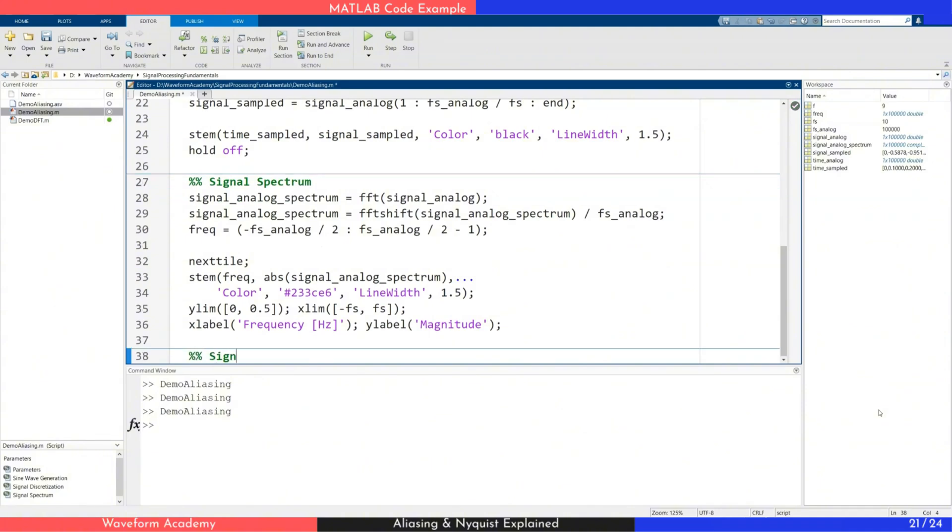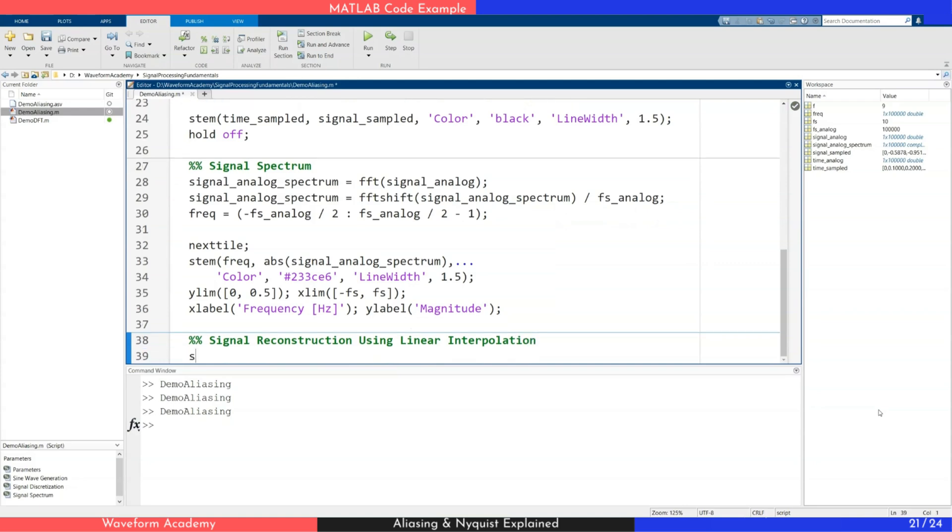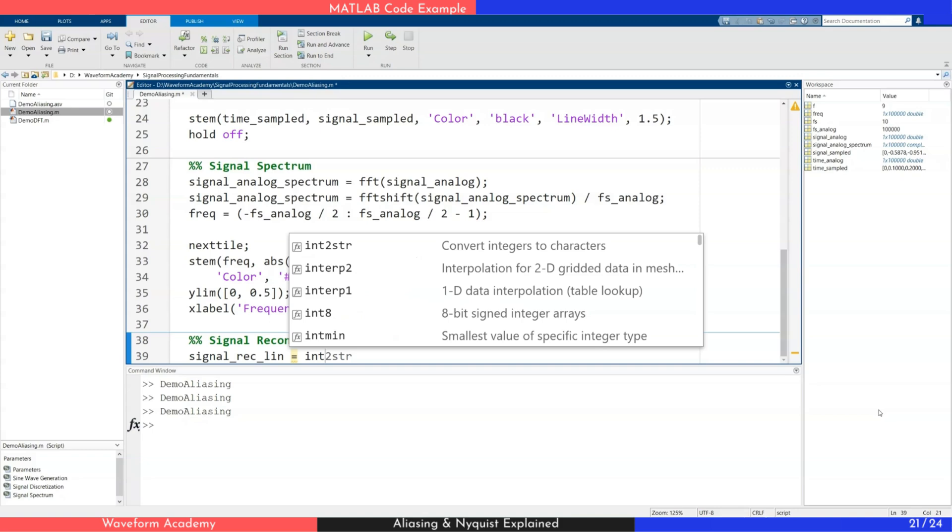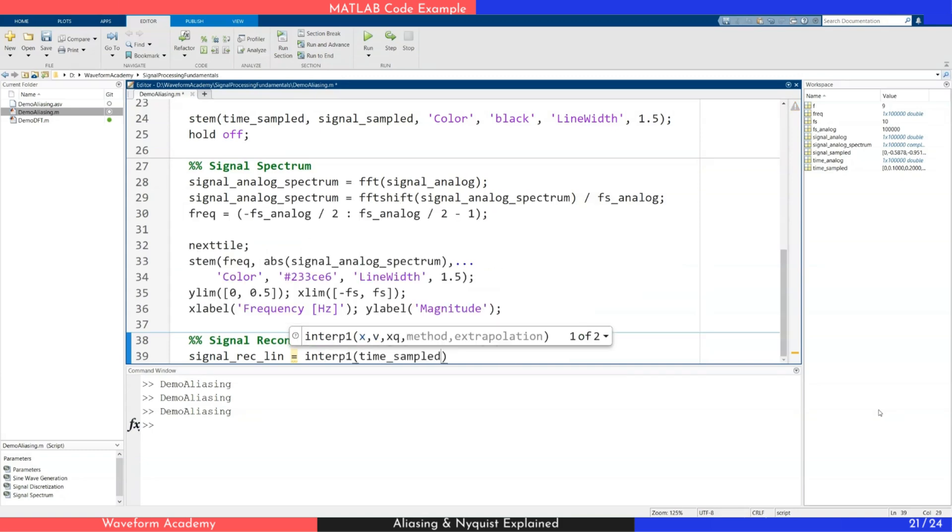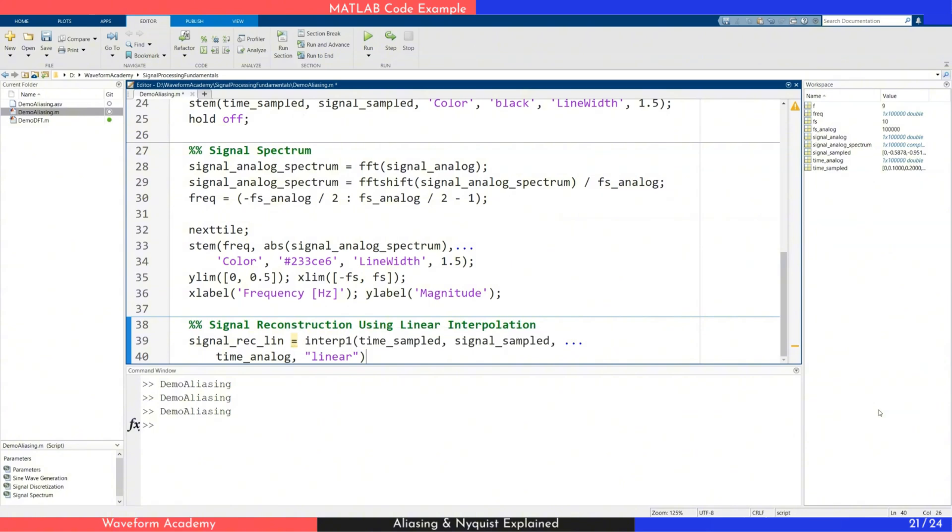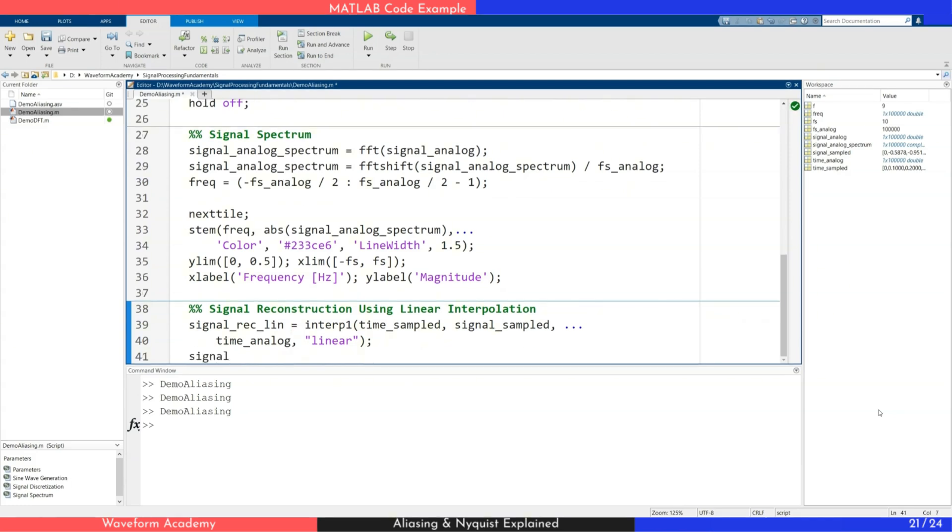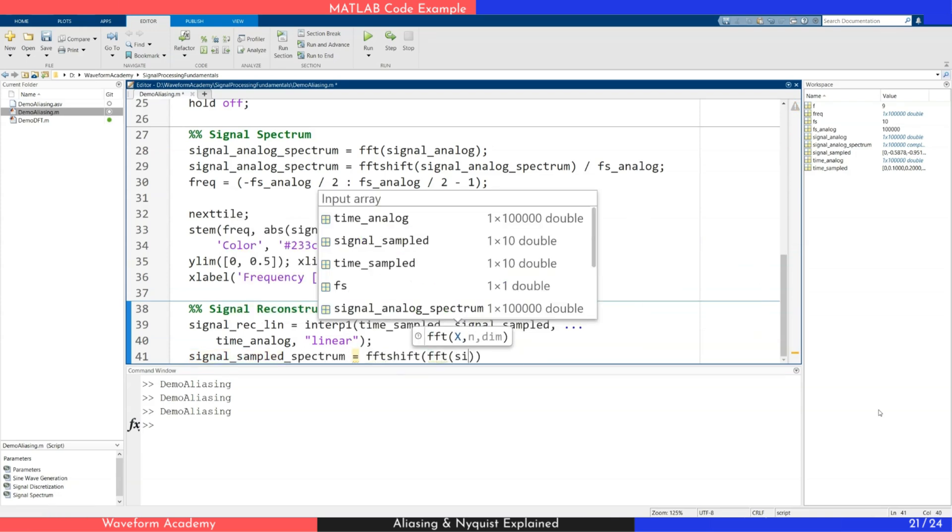Now, let's reconstruct the signal. First, we apply linear interpolation, which connects the sampled points with straight lines. We use MATLAB's interpolate function, where the first two arguments are the time and signal samples. The third specifies the desired time points. And the last defines the interpolation method. If you're curious about interpolation techniques, we'll cover them in a separate video. Next, we compute the spectrum of the reconstructed signal and generate a plot to illustrate the entire process.